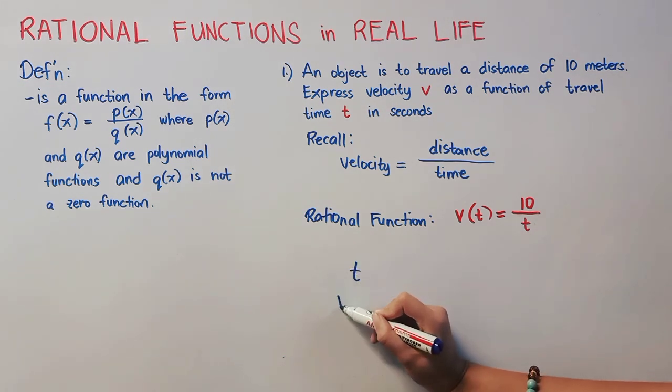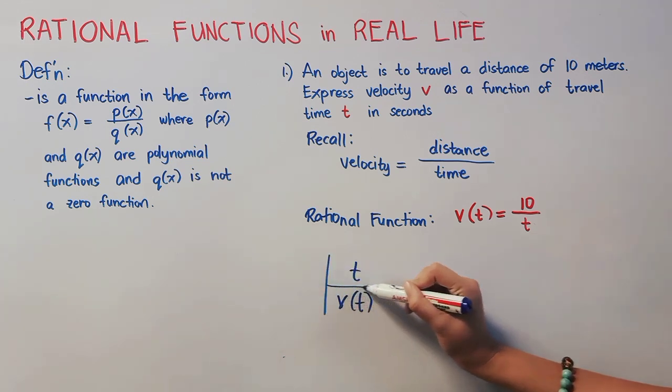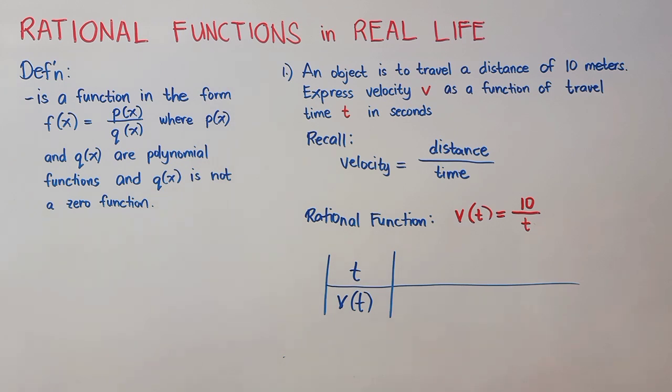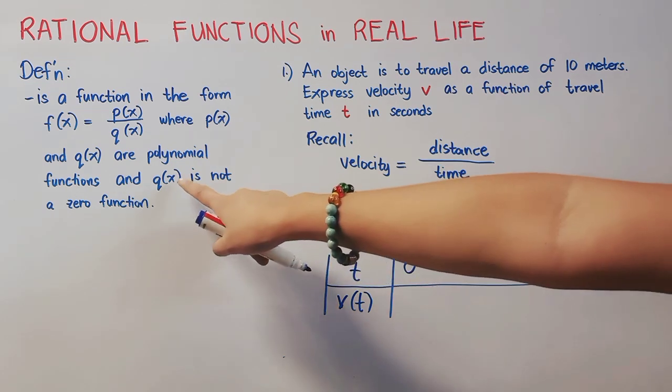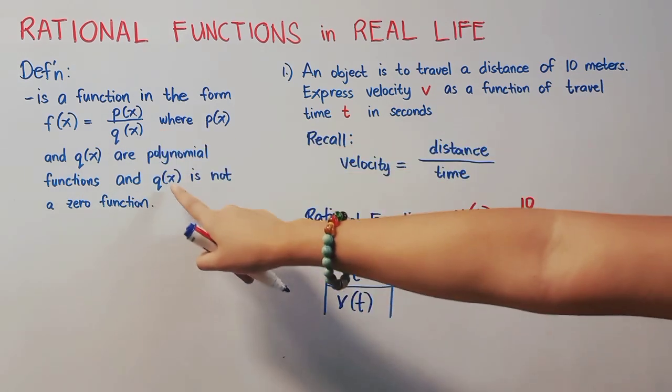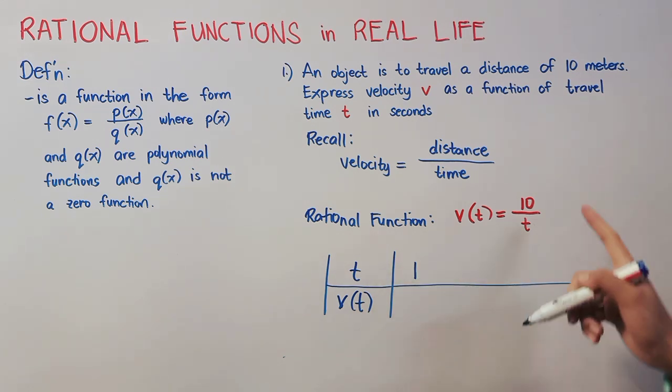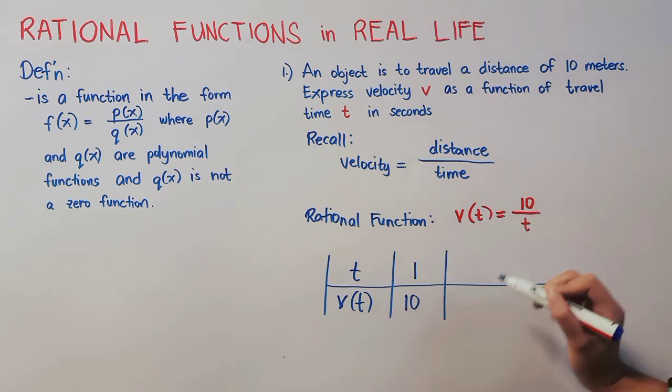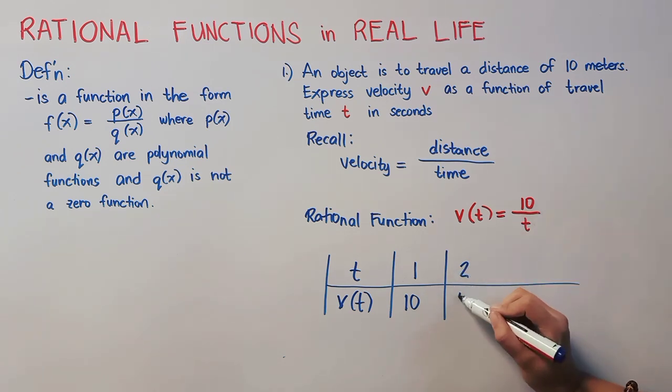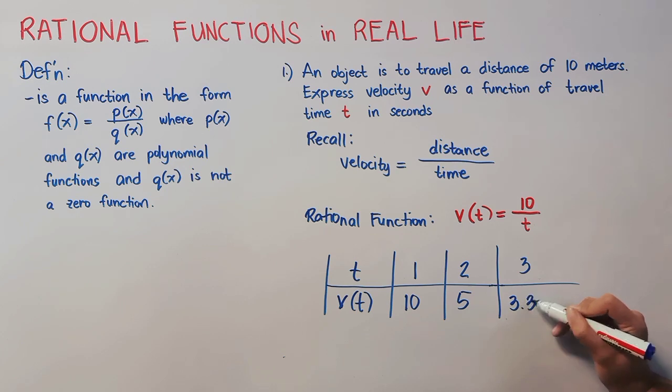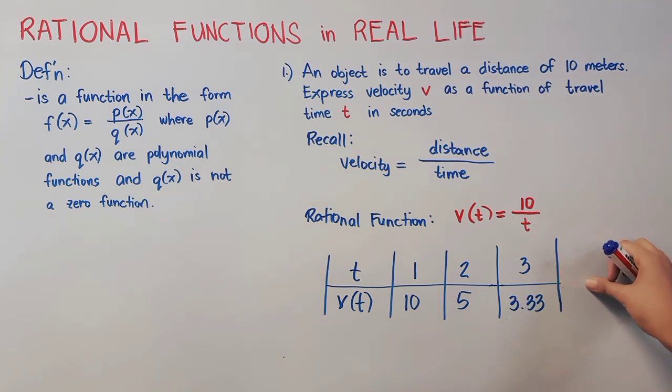In creating our table of values, we have here our time, which is t, and our velocity as a function of travel time is v(t). We cannot start with a negative number, obviously, because there's no negative time. However, if we will start with 0, remember that our denominator should not be equal to 0, as stated in our definition, and a fraction with a denominator of 0 is undefined. So we'll start with 1. 10 over 1 is 10. Next is 2. 10 divided by 2 is 5. So we will simply substitute here. And next, if we have 3 here, then that would be 10 divided by 3 is 3.33 or 3 and 1 third. Now, you can have additional values of time here, but since it's not stated in the given, then I will just stop here.